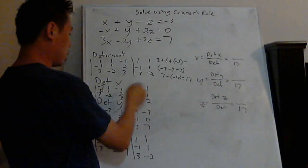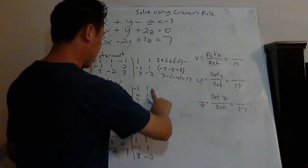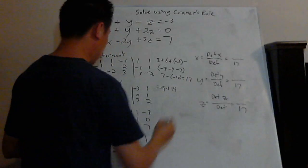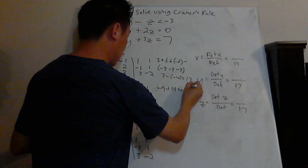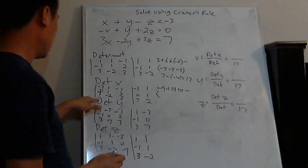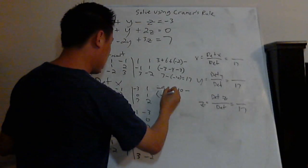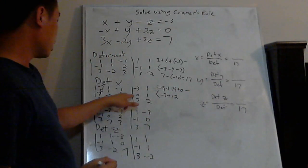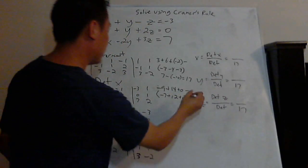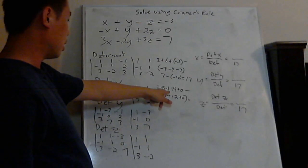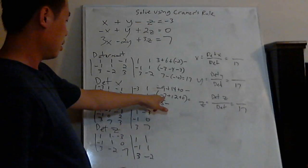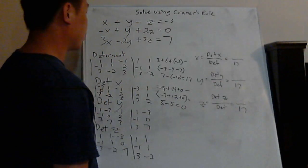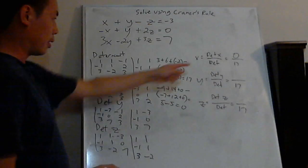For determinant x using the columns method: negative 3 times 3 times 1 is negative 9, plus 1 times 2 times 7 is 14, plus negative 1 times 0 is 0. Then subtract: 7 times 1 times negative 1 is negative 7, negative 2 times 2 times negative 3 is 12, and 3 times 0 is 0. So: negative 9 + 14 + 0 = 5, minus (negative 7 + 12 + 0) = minus 5. That gives 0. So x is going to be 0.